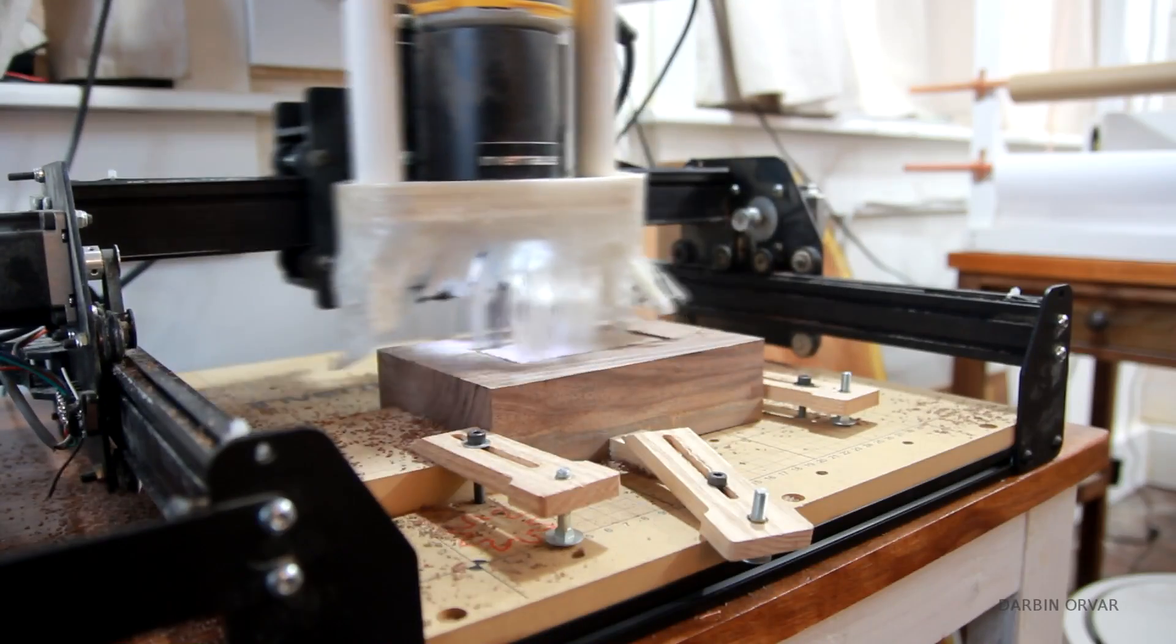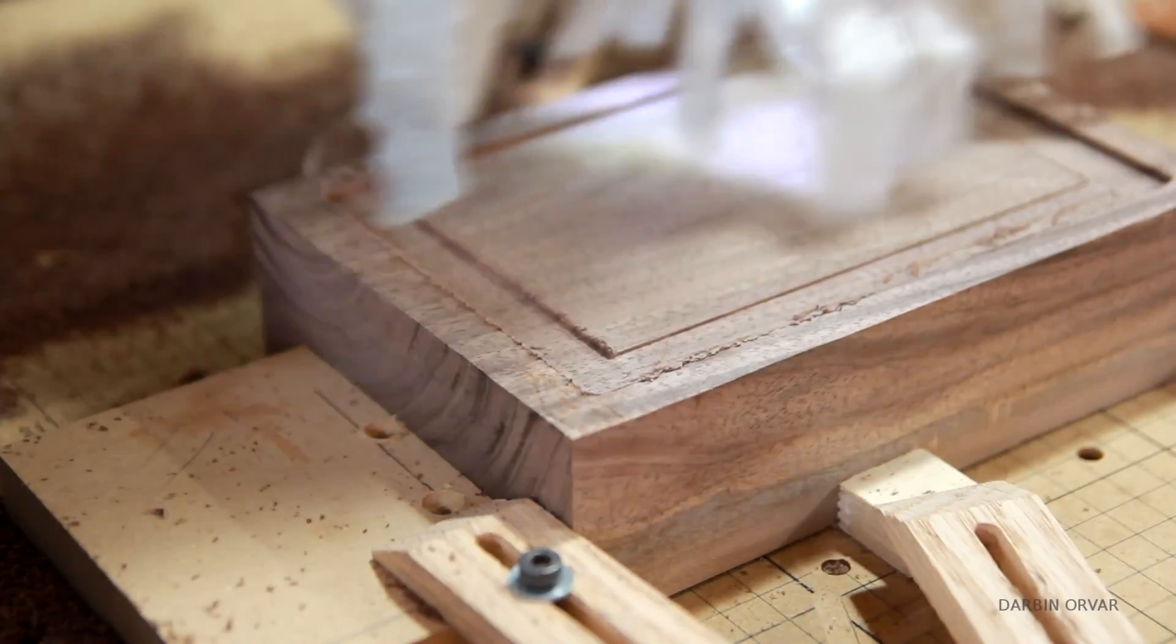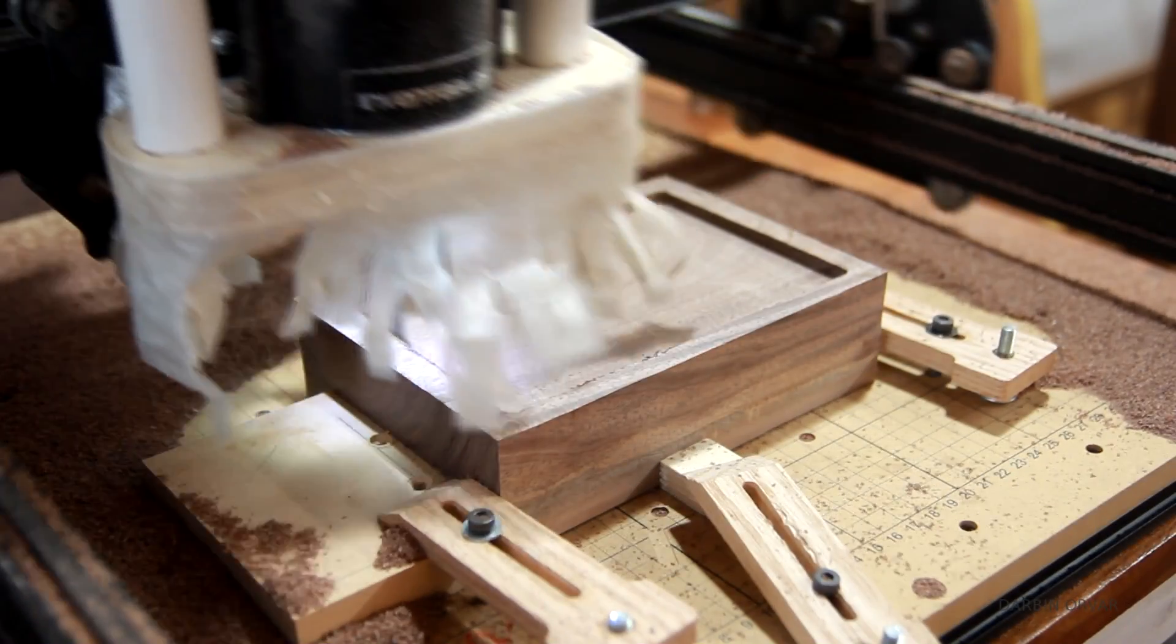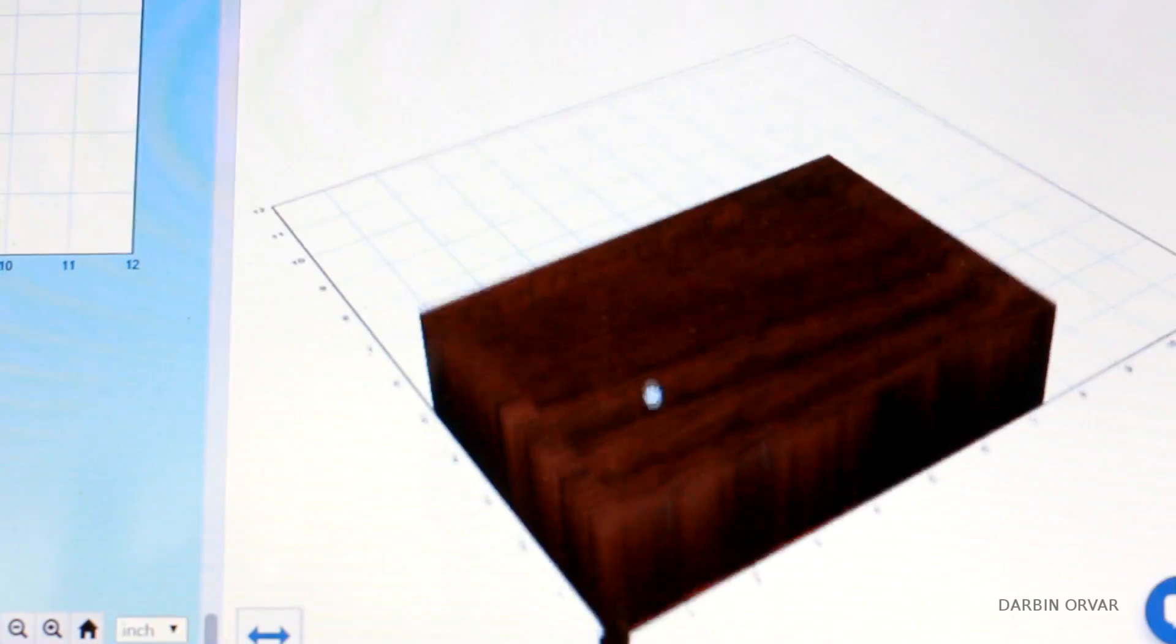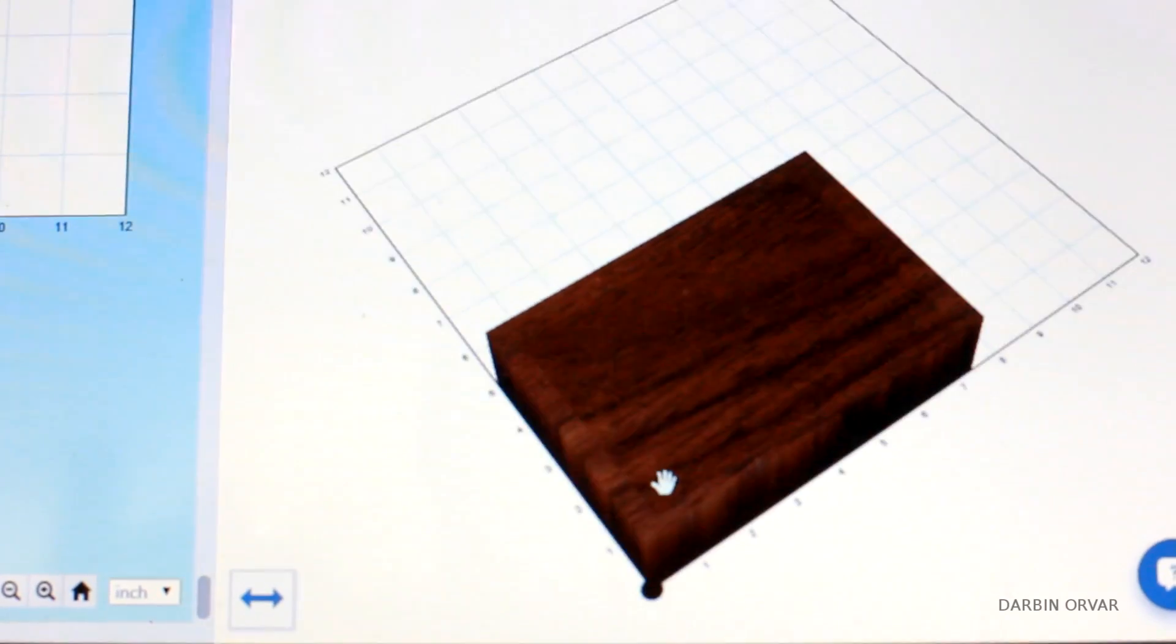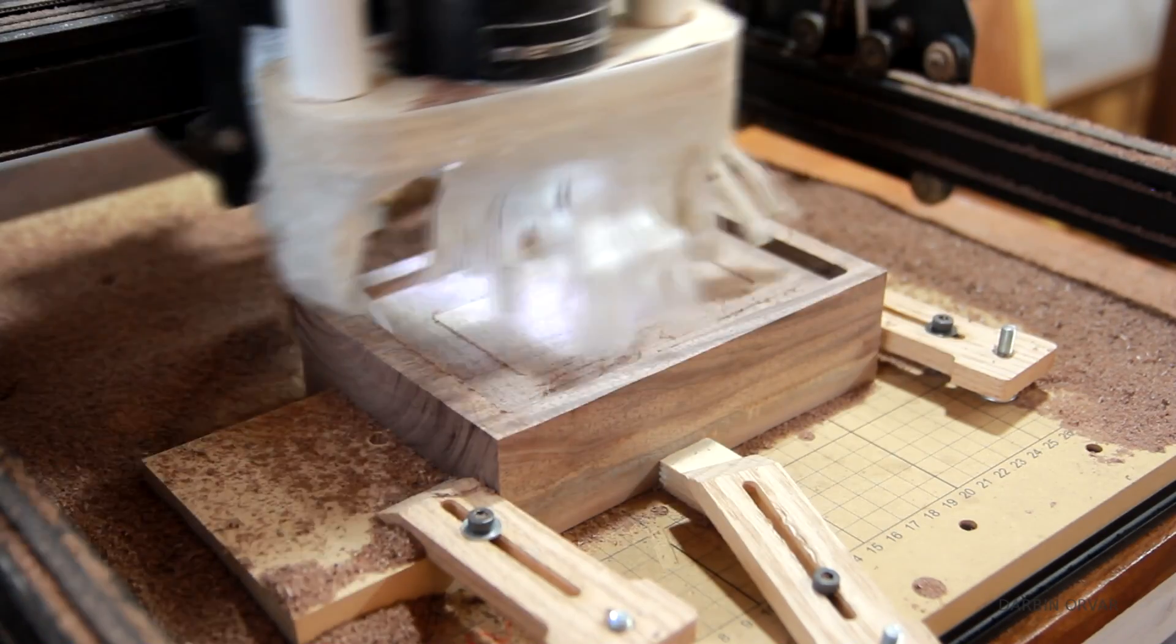So starting out I had a 2 inch thick piece of walnut to work with and in order to carve it out on both the top and the bottom side I decided to use the X-carve which is a CNC machine. First I created a file in Easel and started carving out a quarter inch indention on top. This is for where the aluminum will later fit.